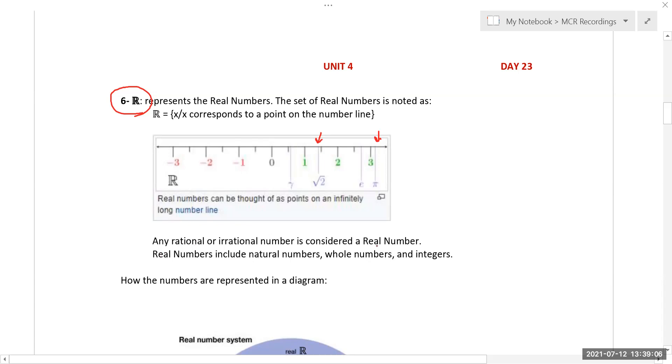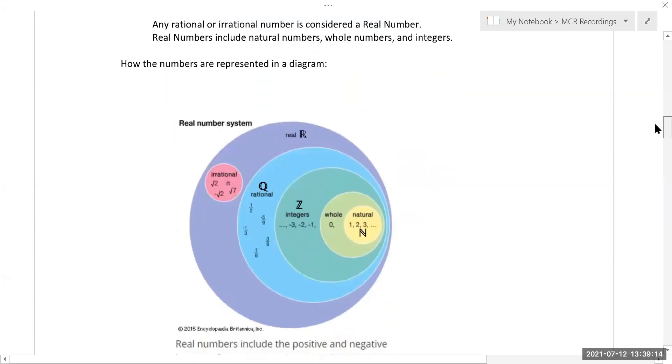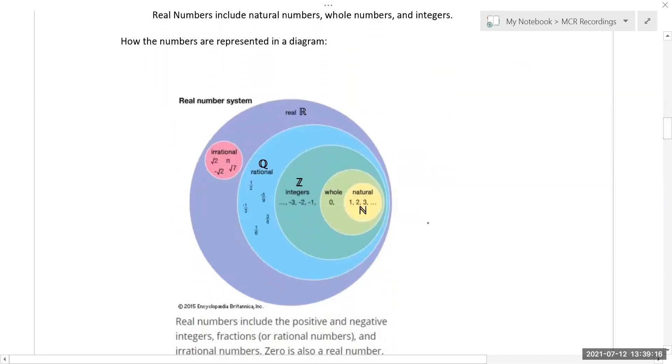If you were to look at them on a diagram, you have all the reals. Within the reals you're either irrational or you're rational. Then within rational, a subset is integers, then whole, then natural. But notice none of these are within irrational. So that's your real number subset.